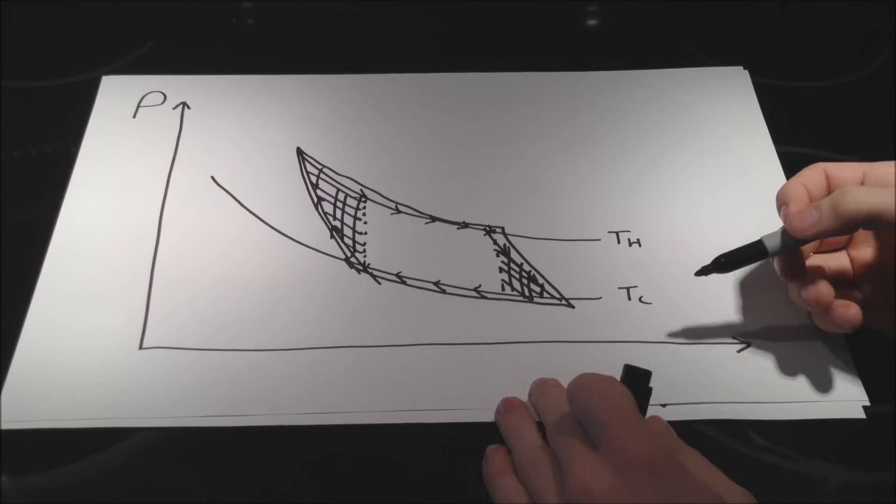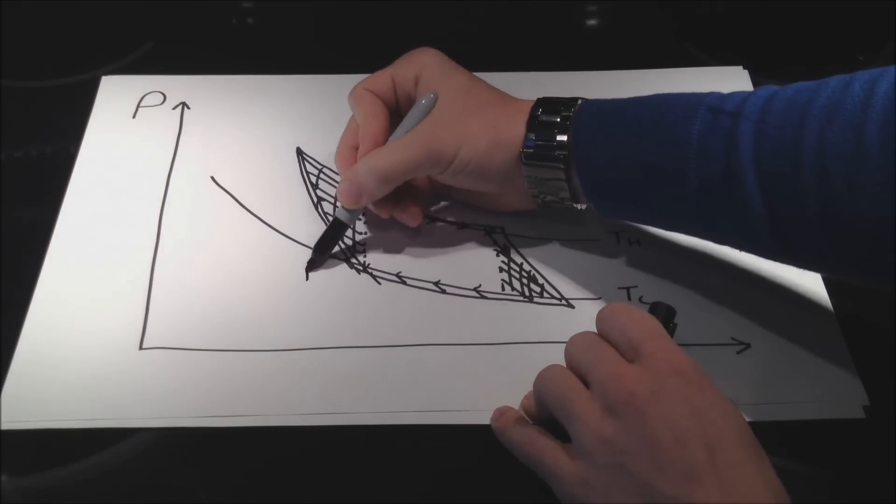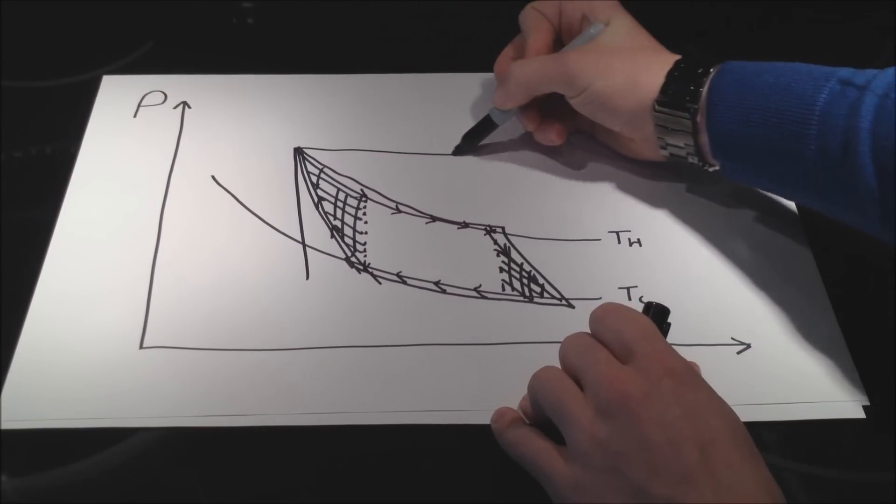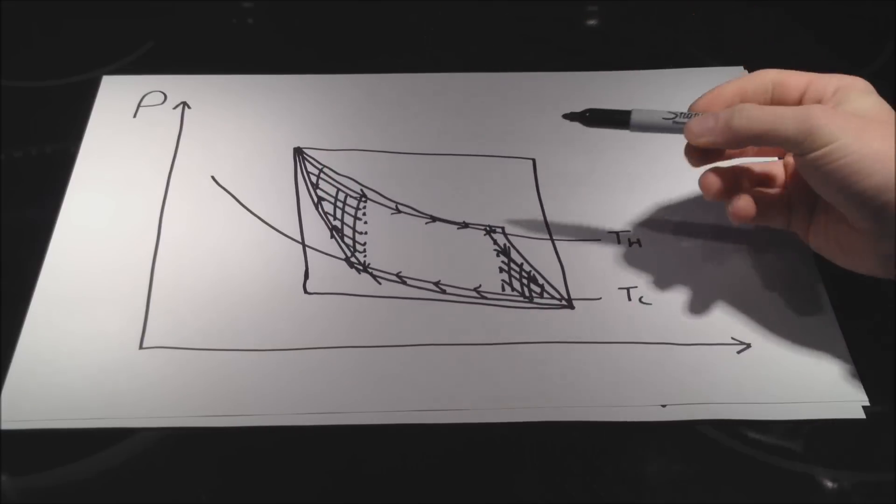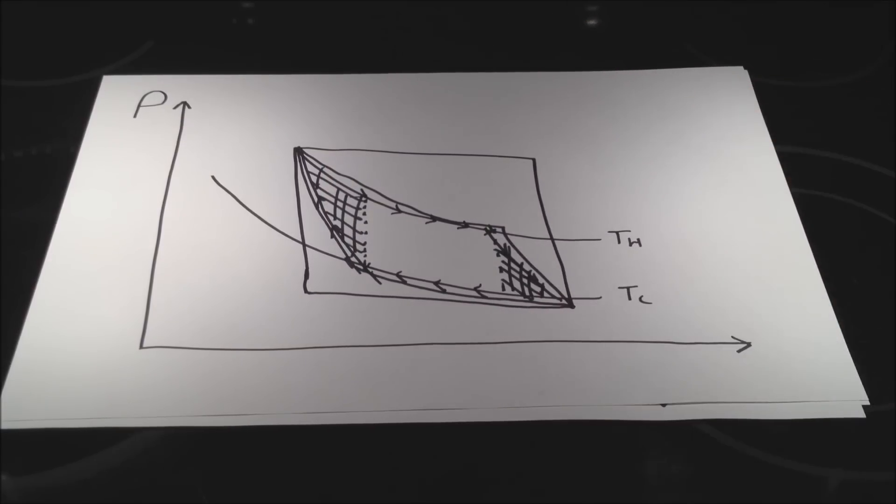Now, using this graphical approach, you might be tempted to say, well, hey, wouldn't it be even better yet to have a square like this? Because that cycle does enclose more area, so you would get more useful work out of it.